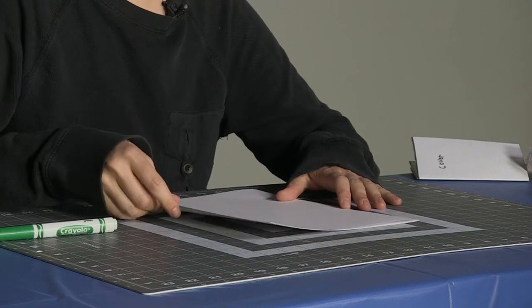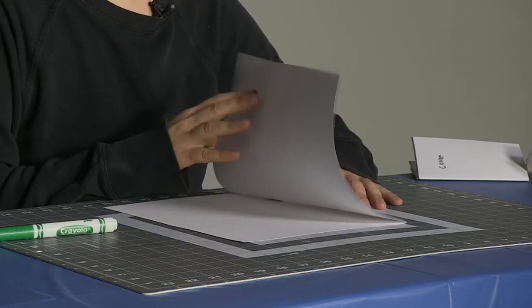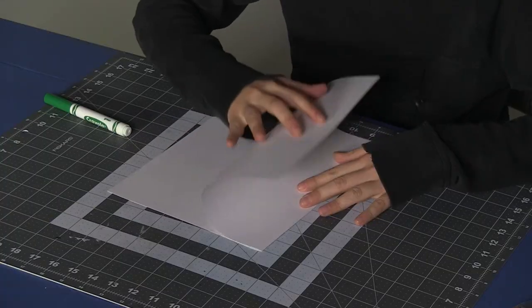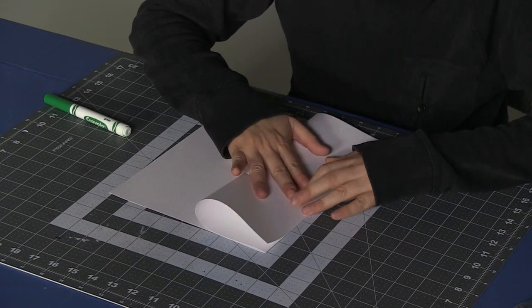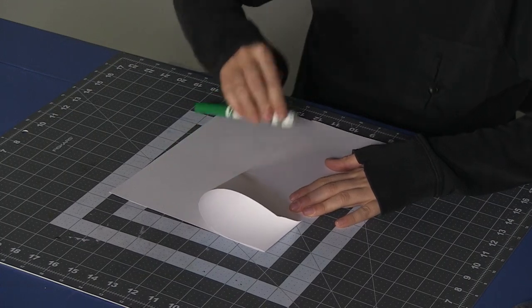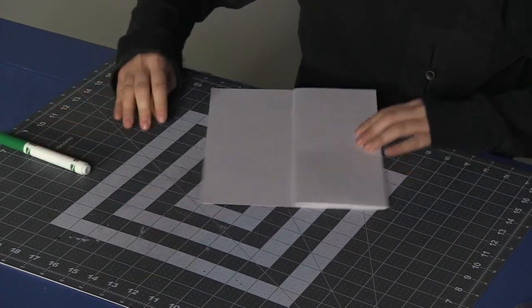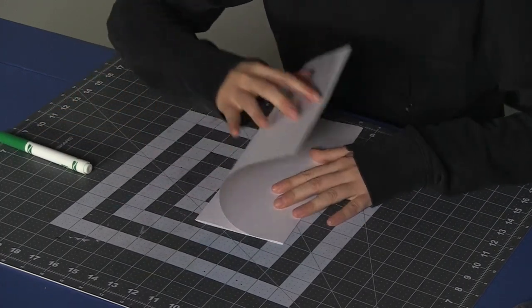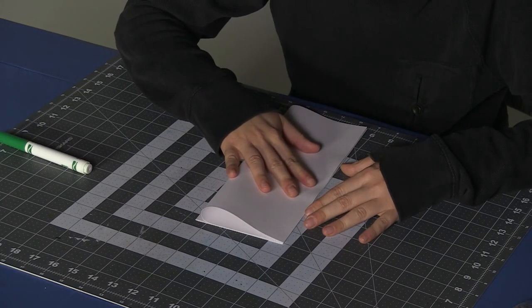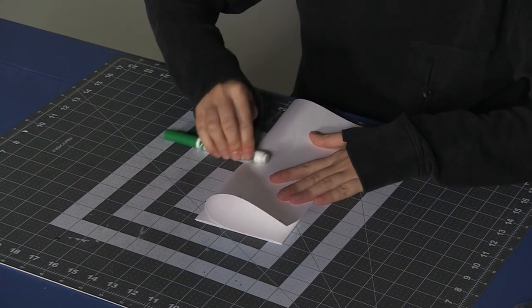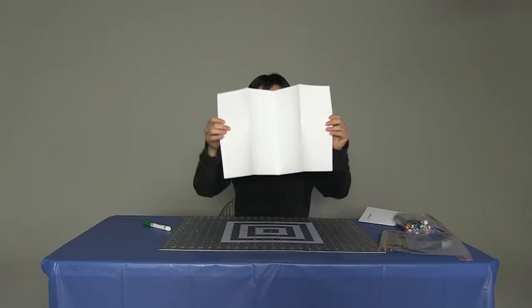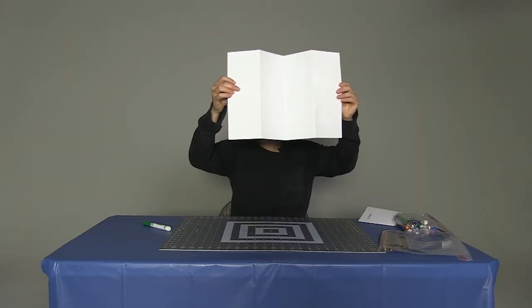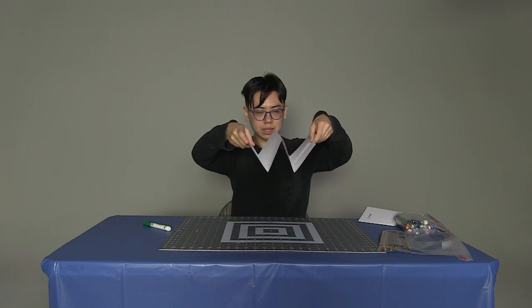Next, what you can do is you can take this flap and fold it right to the end here to this crease that you made before. And flip it over and do the same thing on the other side. Next, when you unfold it, you'll see that you have these four sections, right? And sort of like a W shape. That's pretty cool.